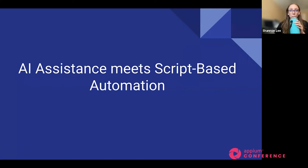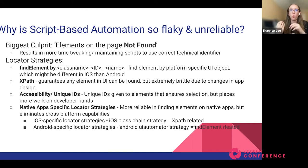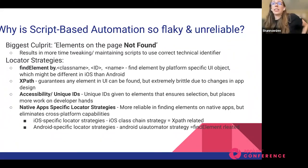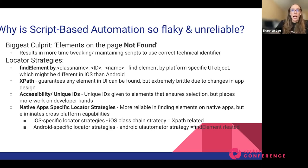This is where we see AI assistants meet script-based automation. Let's talk about why script-based automation is so flaky and unreliable. One of the biggest culprits is that the element is not found on the page. You spend time coding out a test case, run it, and it fails instantly because the element on the page is not found. You can't even continue to the next test step. This is prevalent across different locator strategies.